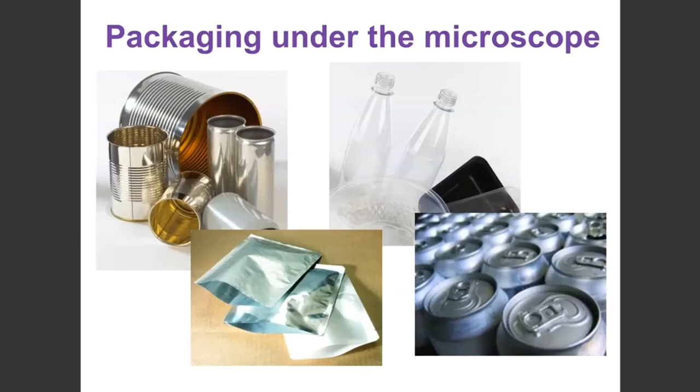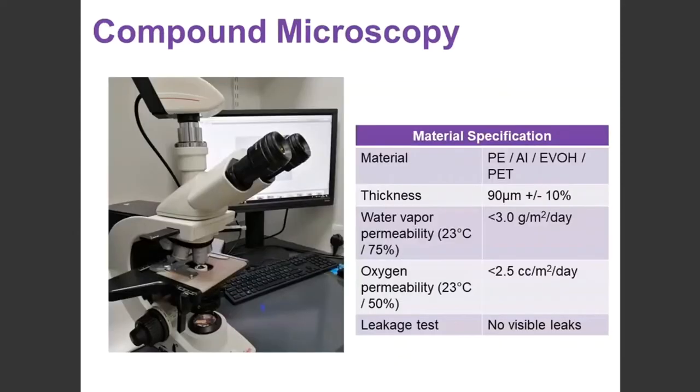So we're going to start off with plastic. The compound microscope. For plastic packaging, we tend to use a combination of compound microscopy and FTIR spectroscopy. First up is our compound, and this is an example of one that we have on site. We can use it to look at a material at a microscopic level.